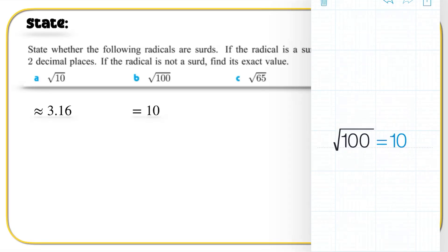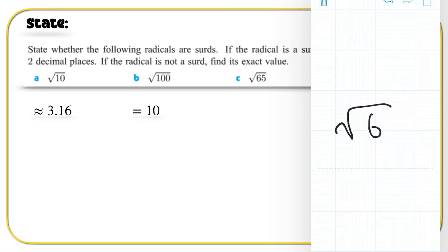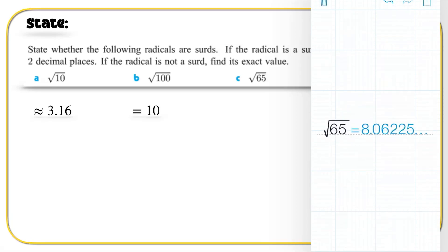Root of 65 — let's check out the root of 65. The root of 65 is 8.06225 and it carries on. We can approximate the value as 8.06 to two decimal places.